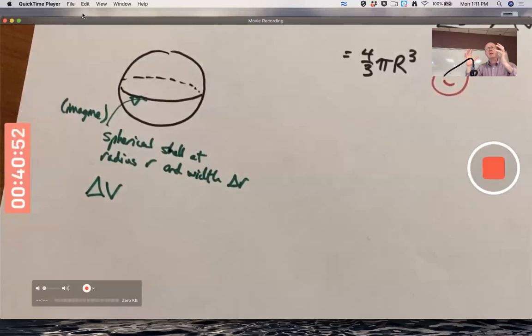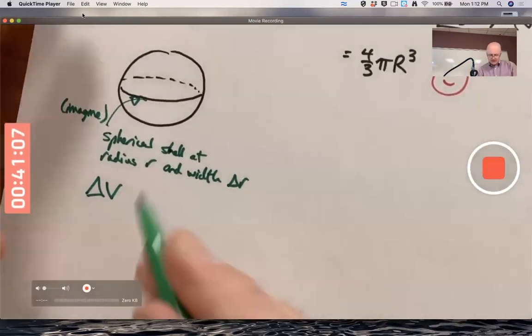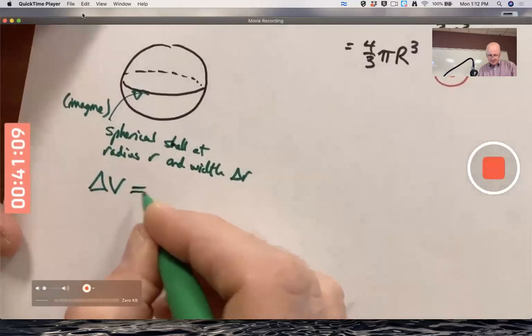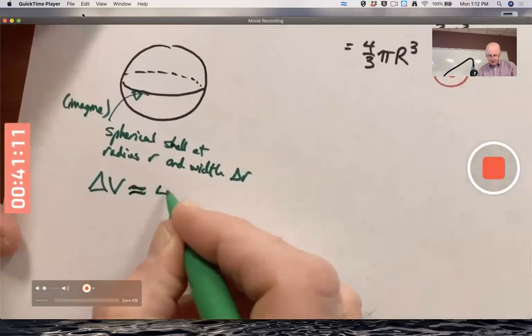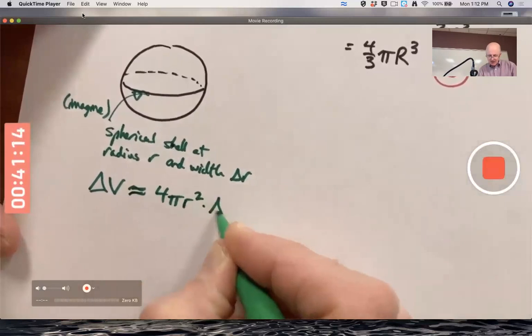should be the surface area of the sphere. 4π r², which I haven't derived the formula for the surface area of a sphere. You can derive surface areas with integrals, we just haven't done it. It'd be the surface area of 4π r² times that small width.